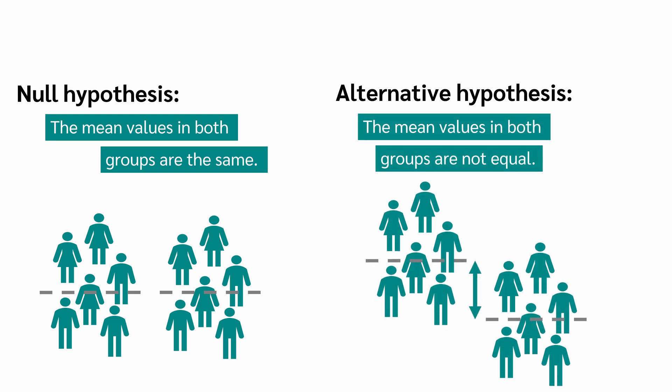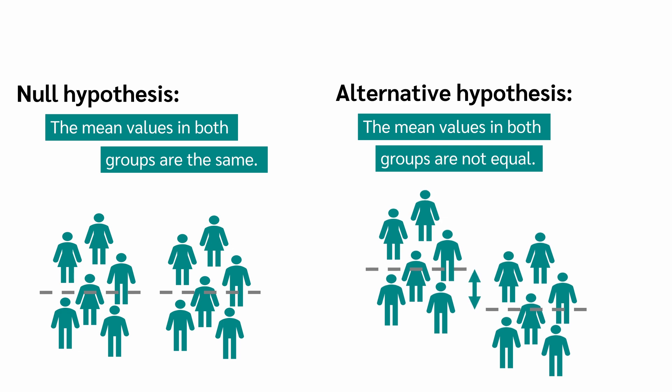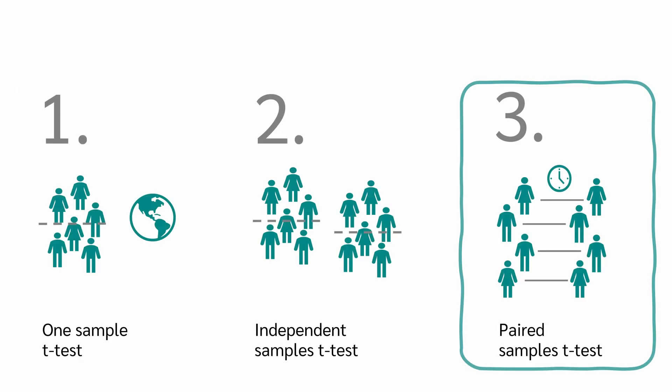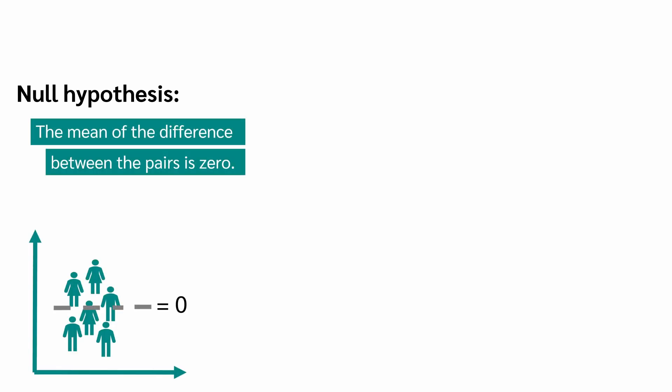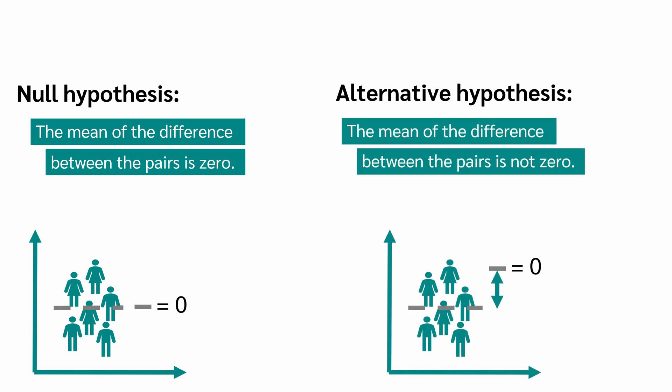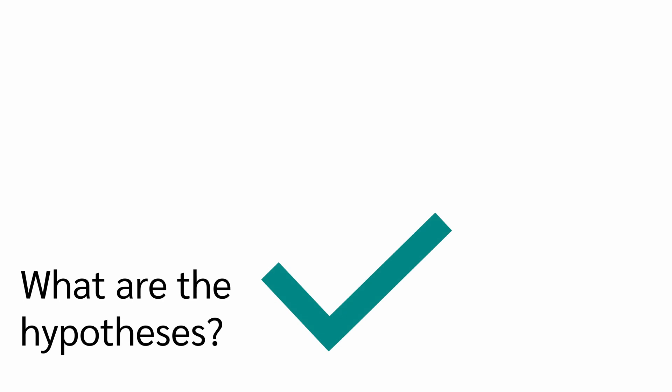So there is a difference between the two groups. And finally, the paired samples t-test. In the paired t-test, the null hypothesis is that the mean of the difference between the pairs is zero. The alternative hypothesis is that the mean of the difference between the pairs is not zero. So now we know what our hypotheses are.